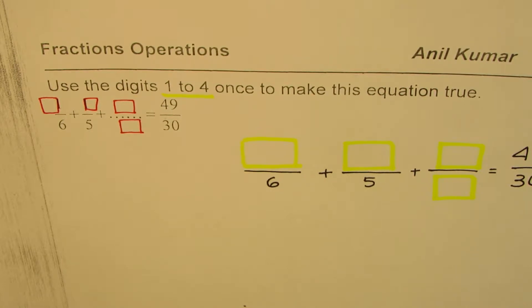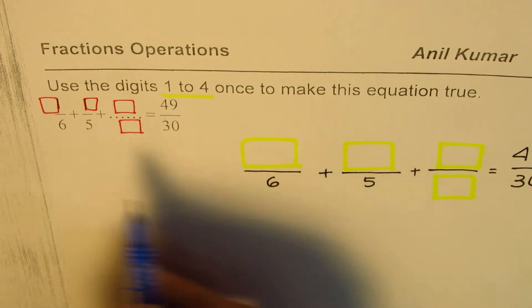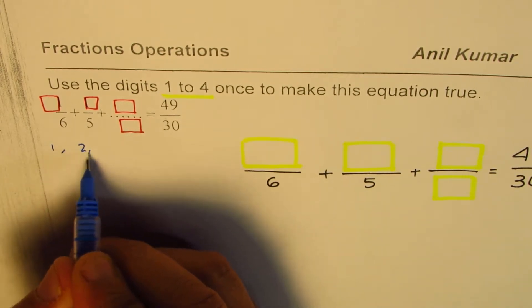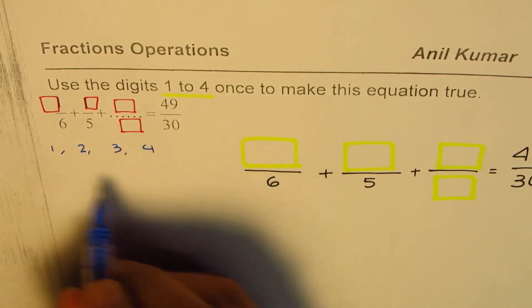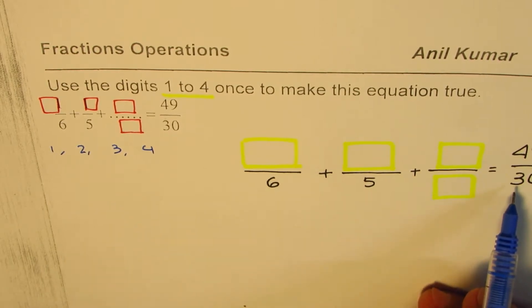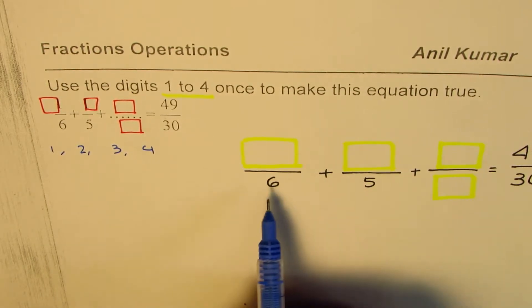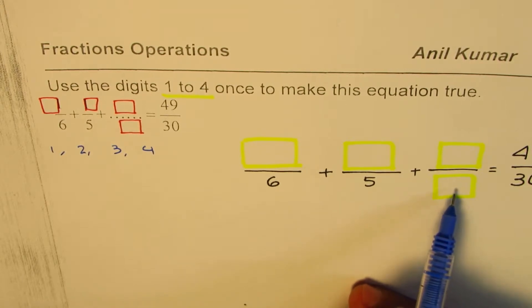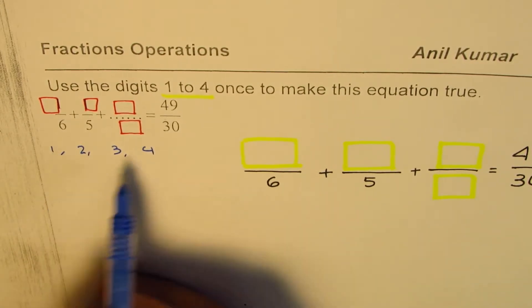Let's look into this question and understand the strategy. We're looking for placing numbers like 1, 2, 3, or 4 here. Now let's look into the denominator. 6 times 5 is 30.